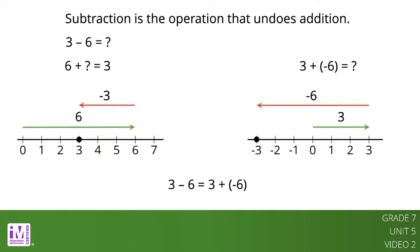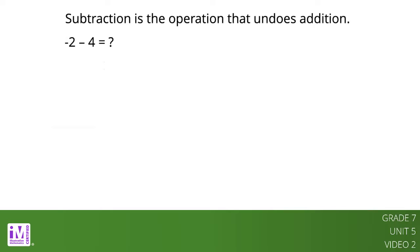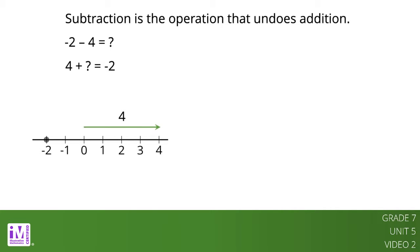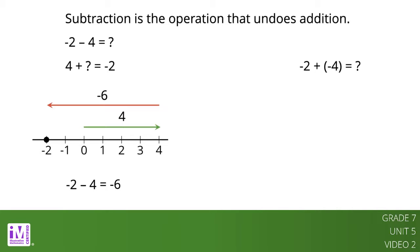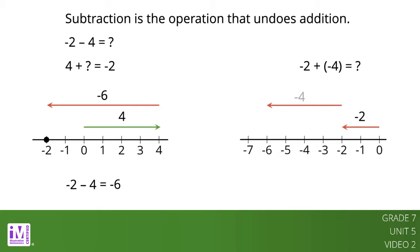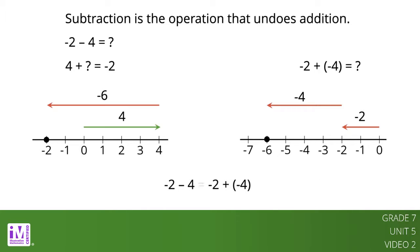Let's look at another example. The answer to negative 2 minus 4 is the same value as the number we can add to 4 to get negative 2. To get the sum of negative 2, the second arrow must be 6 units long, pointing to the left. This tells us that negative 6 is the number that completes these equations. One possibility is negative 2 plus negative 4. Negative 2 minus 4 has the same value as negative 2 plus negative 4.